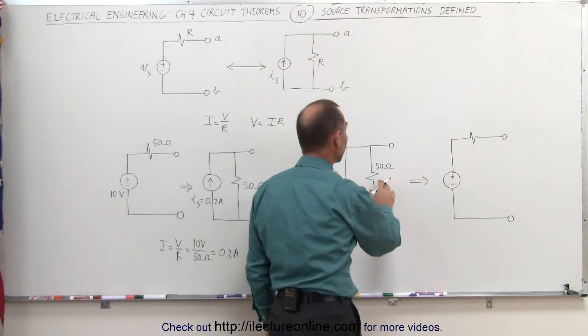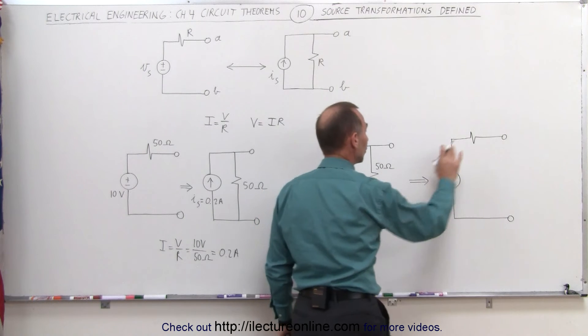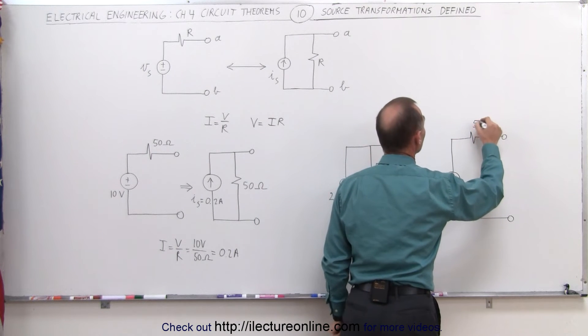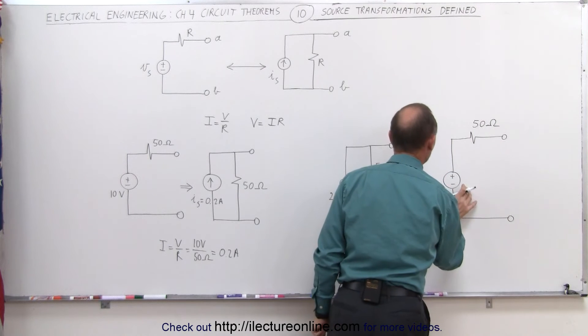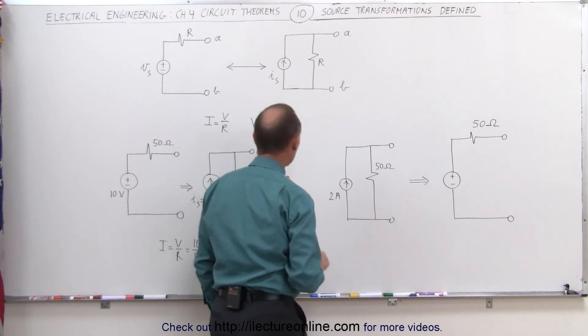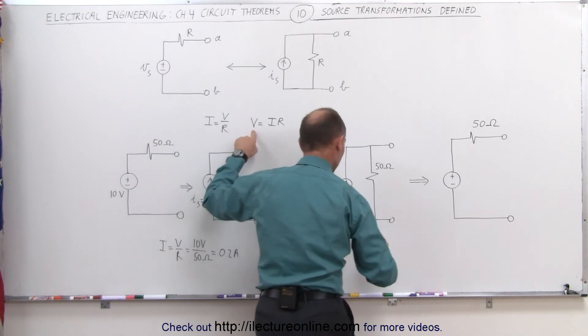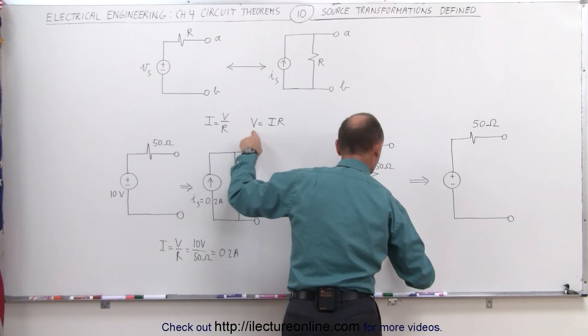Again, the resistances, even though we go from a parallel resistor to a series resistor, the value of the resistance doesn't change. But how do we find the voltage of the voltage source? Using Ohm's law, we can say that V equals I times R.